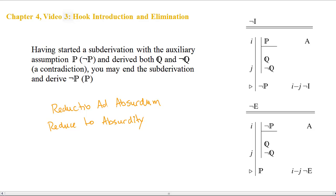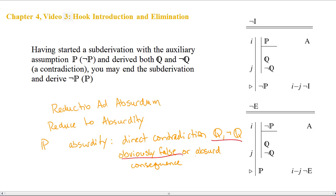The basic strategy here is you take something that you believe to be false, some claim say P, and you show that it leads to something absurd, either a direct contradiction as in our formal version on the right-hand side, or some obviously false or absurd consequence. If P leads to a contradiction or an obvious falsehood or absurdity, then P can't be true, so not P must be true.